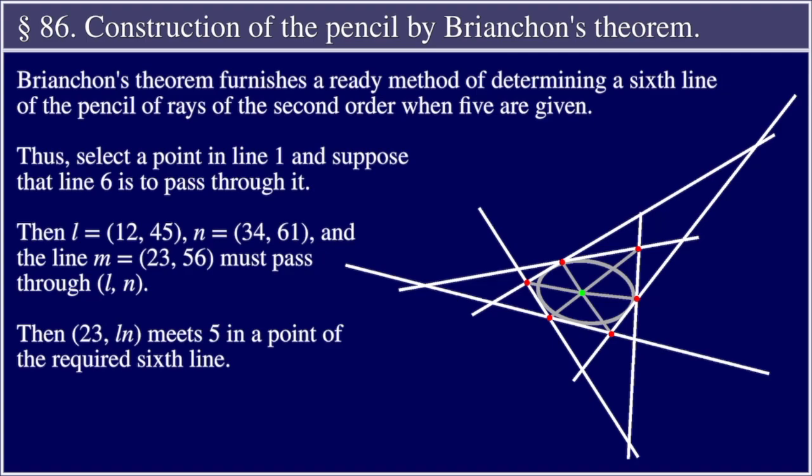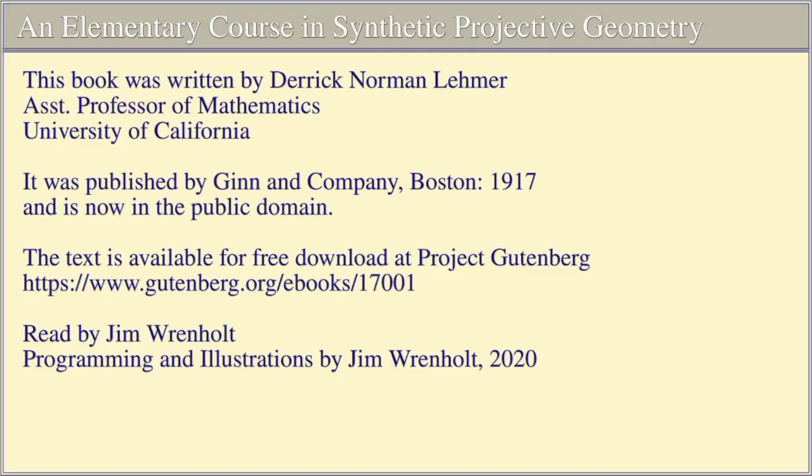Section 86: Construction of the Pencil by Brianchon's Theorem. Brianchon's Theorem furnishes a ready method of determining a sixth line of the pencil of rays of the second order when five are given. Thus, select a point in line 1 and suppose that line 6 is to pass through it. Then L equal to (1,2)(4,5), N equal to (3,4)(6,1), and the line M equal to (2,3)(5,6) must pass through (L,N). Then (2,3), L, N meets 5 in a point of the required sixth line.